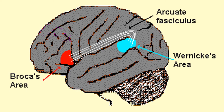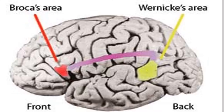Broca's area and Wernicke's area communicate with each other, but not on the surface of the cortex — rather, underneath within the cerebrum. There's a bundle of fibers that connect these two areas called the arcuate fasciculus. Here we see an illustration of Broca's area, Wernicke's area, and the purple strip indicating the arcuate fasciculus, which is located underneath the cerebral cortex.